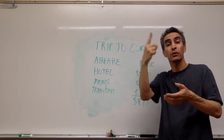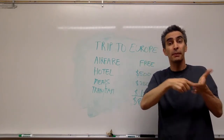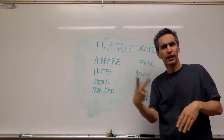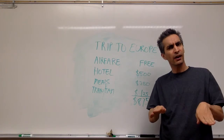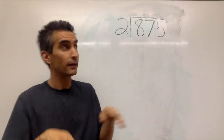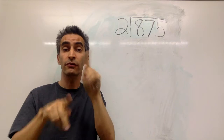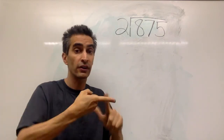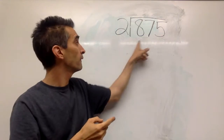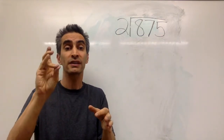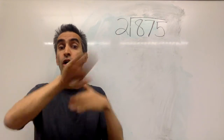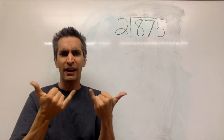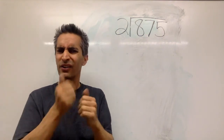That means if your girlfriend's going to pay one half and you're going to pay one half, well, how do you divide the bill between the two of them? Now we're going to show you how to divide. The two represents two people, the girlfriend and the boyfriend, that are both going on vacation. And $875 represents how many dollars the whole trip costs.